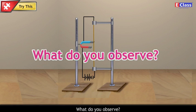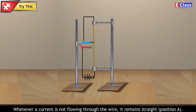What do you observe? Whenever a current is not flowing through the wire, it remains straight, position A.